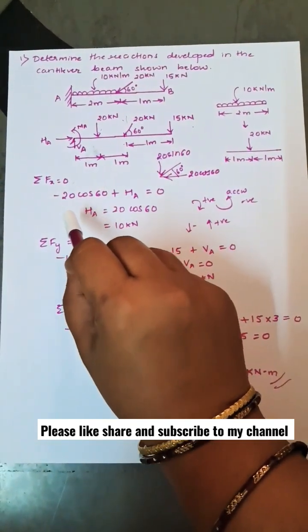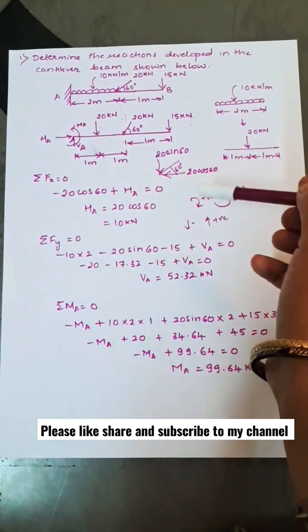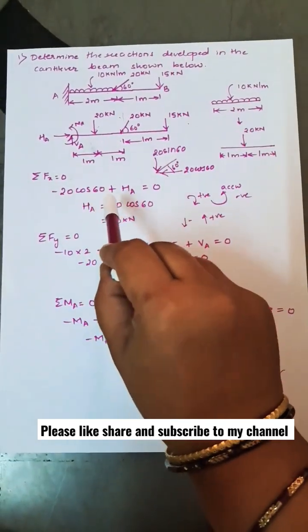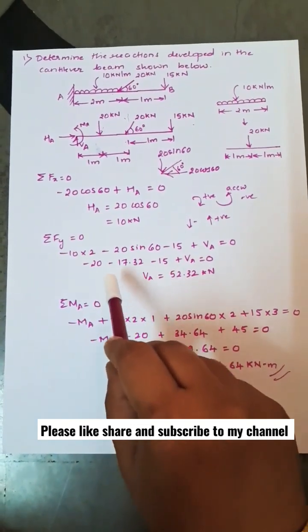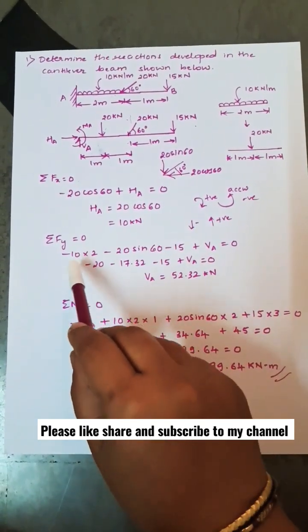So minus 20 cos 60, that is towards right positive, towards left negative, so minus 20 cos 60 plus Ha equal to zero. Ha is equal to 10 kilonewtons. Taking summation of vertical forces, upwards positive, downwards negative.